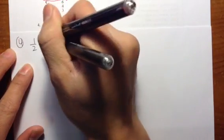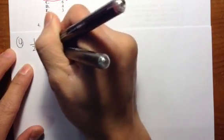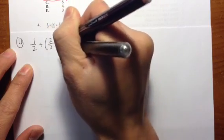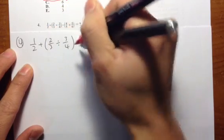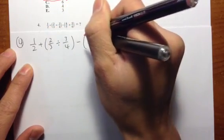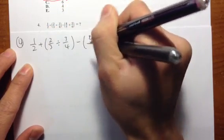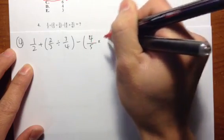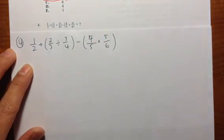Let's see the procedure for how to solve this calculation. Let me first copy down the question: 1 half plus parentheses, 2 thirds divided by 3 over 4, close parentheses, minus parentheses, 4 over 5 times 5 over 6, close parentheses.